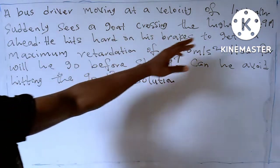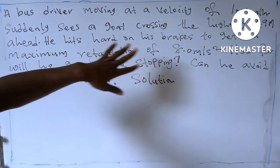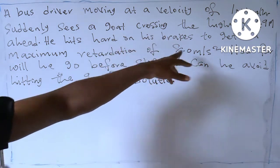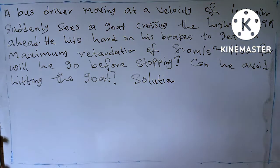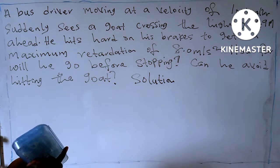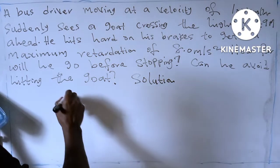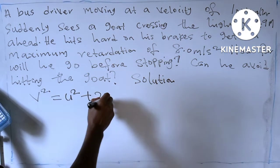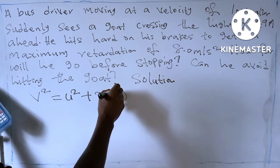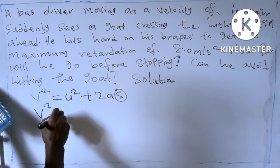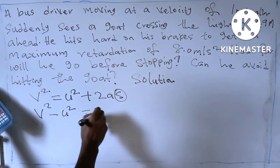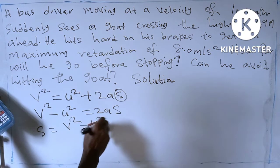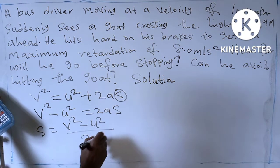Our initial velocity is 100 kilometers per hour, and we have retardation here, which is the opposite of acceleration, which is 8 meters per second squared. So what formula are we going to use? Let's use v² = u² + 2as. We are looking for the distance, so rearranging: s = (v² − u²) / 2a.